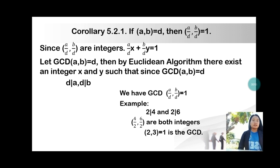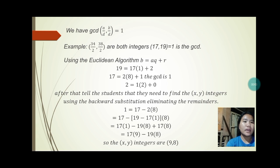Example: 2 divides 4 and 2 divides 6; 4/2 = 2 and 6/2 = 3 are both integers, and gcd(2, 3) = 1. Second example: 34/2 = 17 and 38/2 = 19 are both integers, and gcd(17, 19) = 1. Using the Euclidean algorithm: 19 = 17 × 1 + 2, 17 = 2 × 8 + 1, gcd is 1.